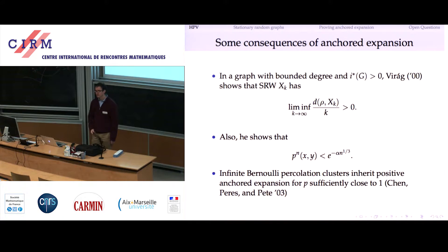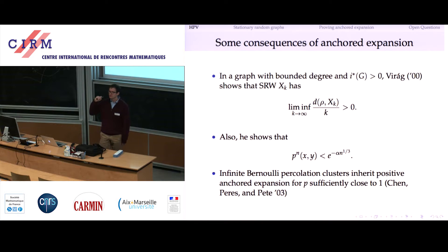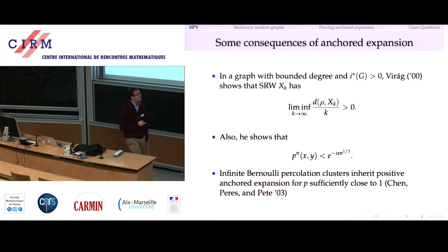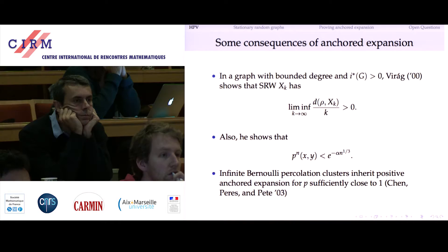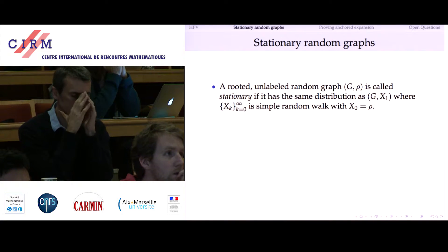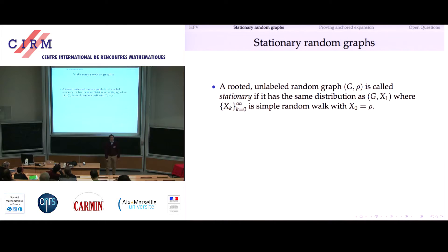I would like to apply one of these conditions to the graph in question. You'll notice that Balint's theorem requires bounded degree, and the graph I described does not have bounded degree. In this case it will not be a problem, but we need to get around it — we'll still be able to conclude ballisticity. This is an example of a stationary random graph.